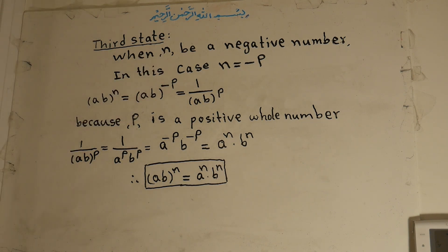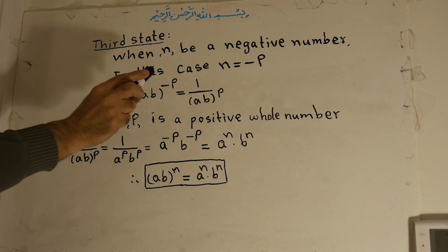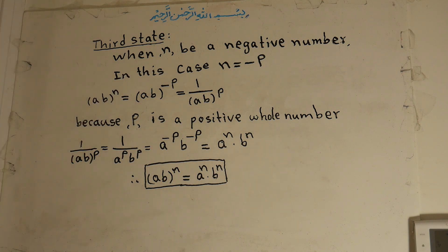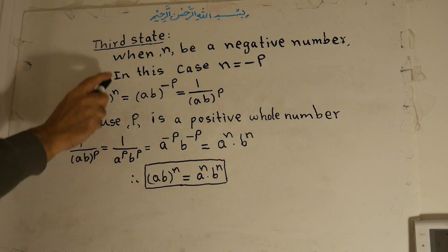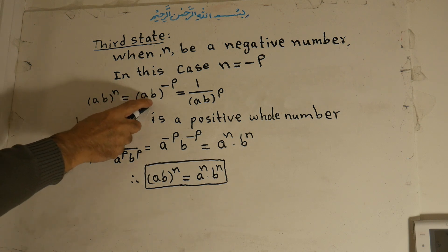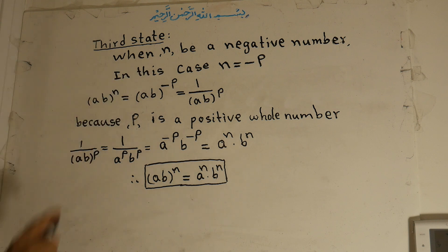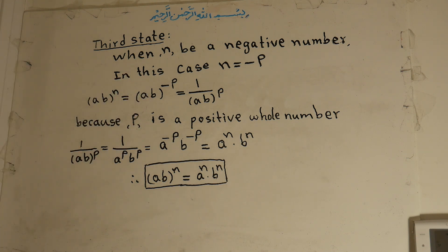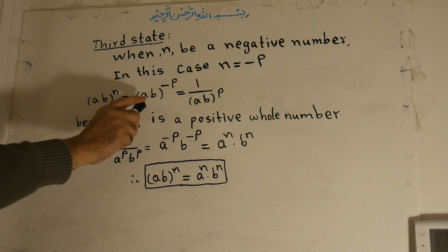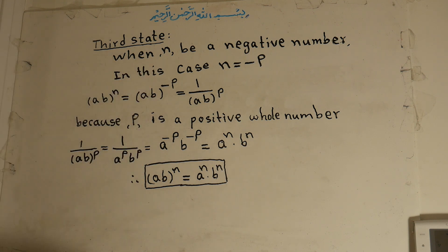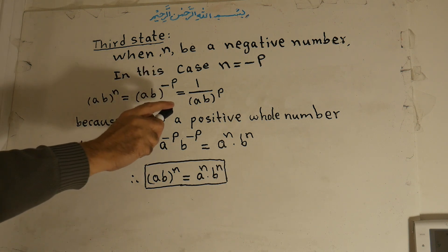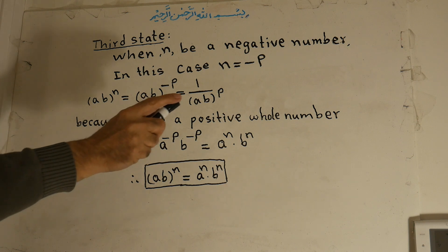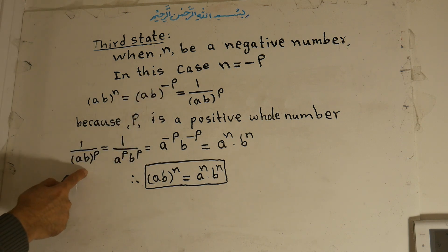Third case: when n is a negative number. In this case n is equal to negative p. So ab, meaning a times b to the power of n, equals ab to the power of negative p. If you want to change from negative to positive, you should take the inverse: the inverse of ab to the power of negative p is equal to one over ab to the power of positive p.